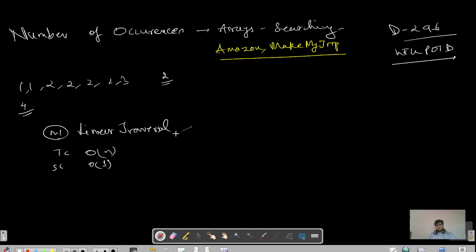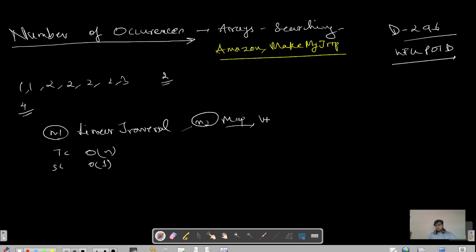Method two: whenever a question involves number of occurrences or duplicates, one thing that must hit your mind is maps, where key-value pairs storing frequency are used. Using this approach, we put all elements in the map and increase the frequency as each element is encountered. For this we have O(n) time complexity and O(n) space complexity to store all the elements in the map.